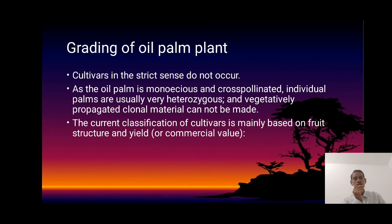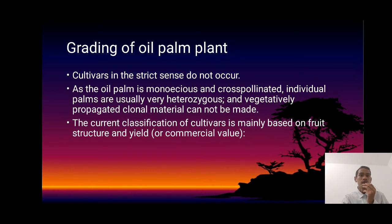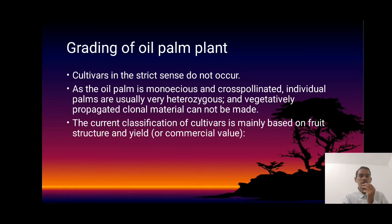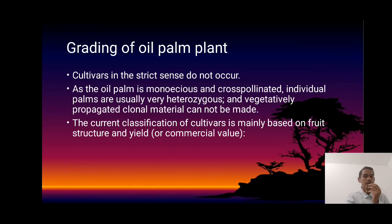The fourth topic is the grading of oil palm trees. As the oil palm is monoecious and cross-pollinating, individual plants are usually very variable and vegetative propagation of clonal material cannot be easily done. The commercial classification of cultivars is mainly based on the fruit, mesocarp, and yield or commercial value. It is hard to produce oil palm plants using vegetative propagation.